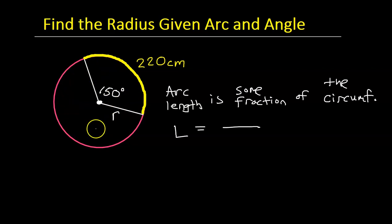We know that the total number of degrees in the entire circle is 360. So the fraction is what fraction of the circle is represented by 150 degrees. In other words, 150 degrees out of a total of 360. That's the fraction that we are referring to when we say some fraction, some fraction of the circumference.